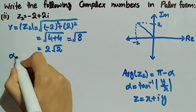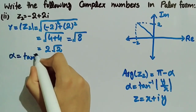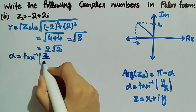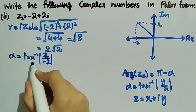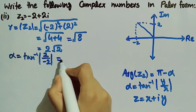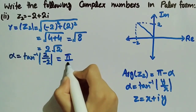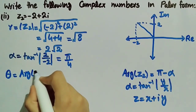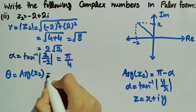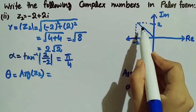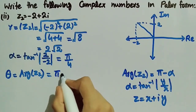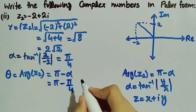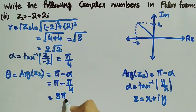Now we will find the value of alpha, which is equal to tangent inverse of y over x. In this case y is 2 and x is minus 2, so tangent inverse of 2 divided by minus 2 gives alpha equal to pi by 4. To find theta, the principal argument of z2, since the complex number is in the second quadrant, theta equals pi minus alpha, which is pi minus pi by 4, which equals 3 pi by 4.